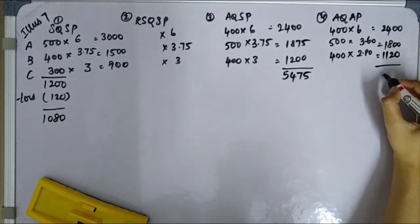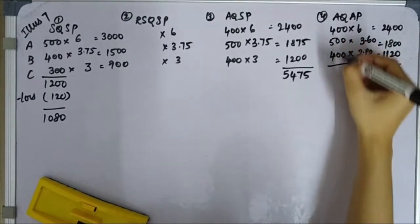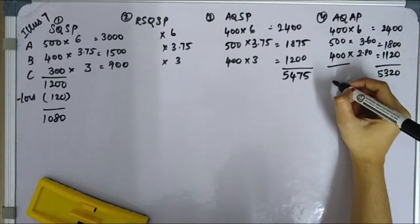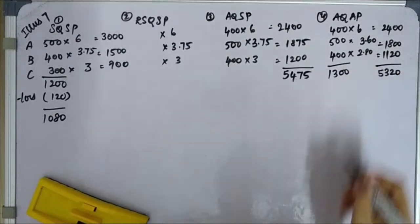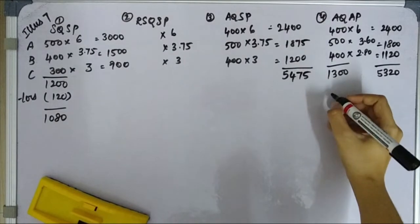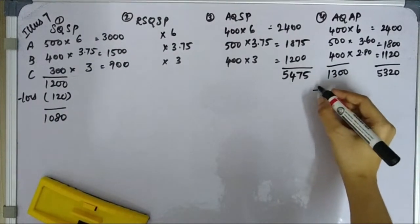Overall value is 2,400, 1,800, and 1,120. Overall summation value is 5,320. Total actual units 1,300 units, total output 1,080 units.